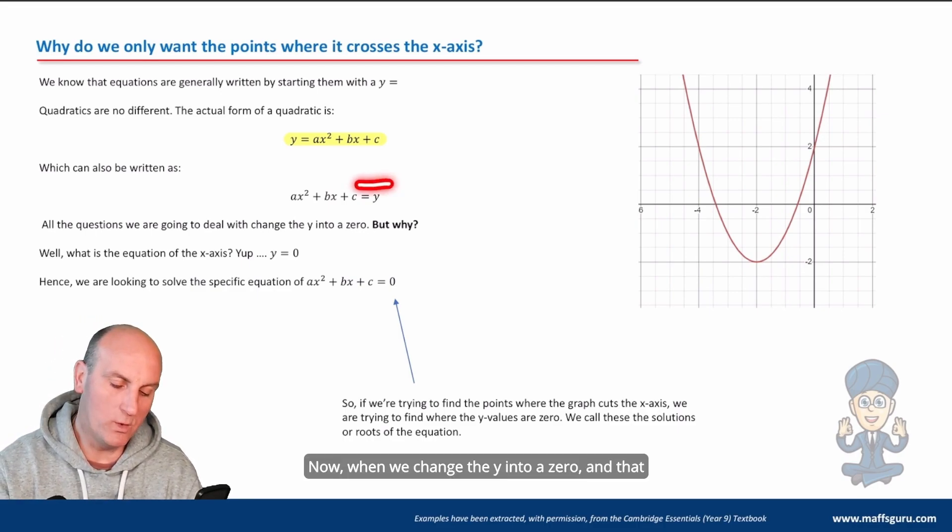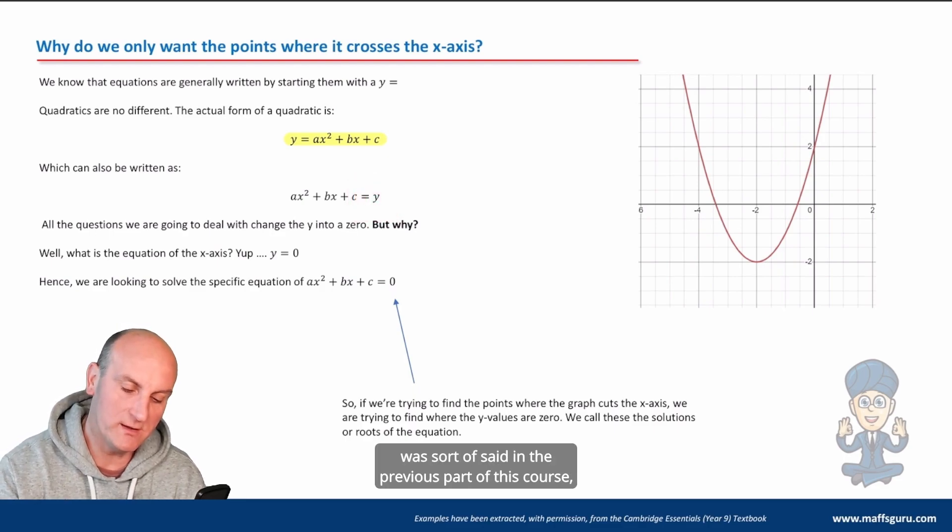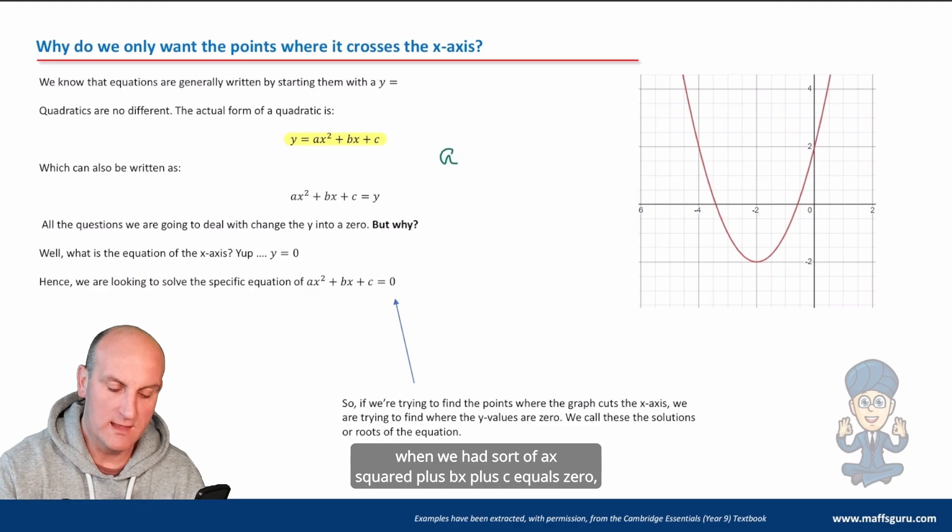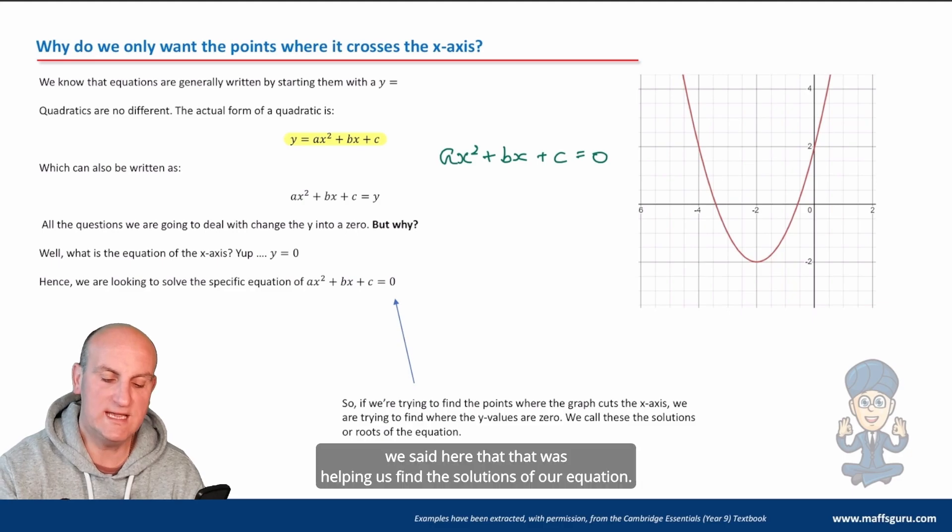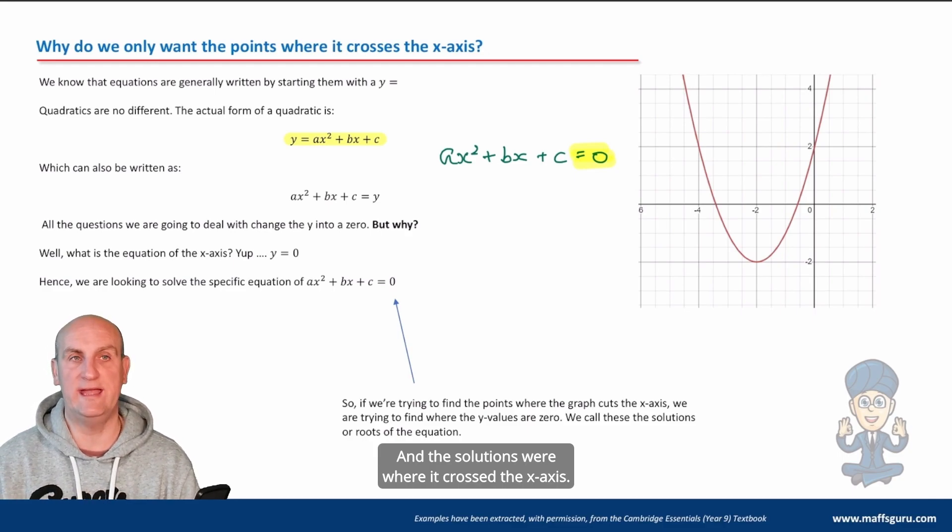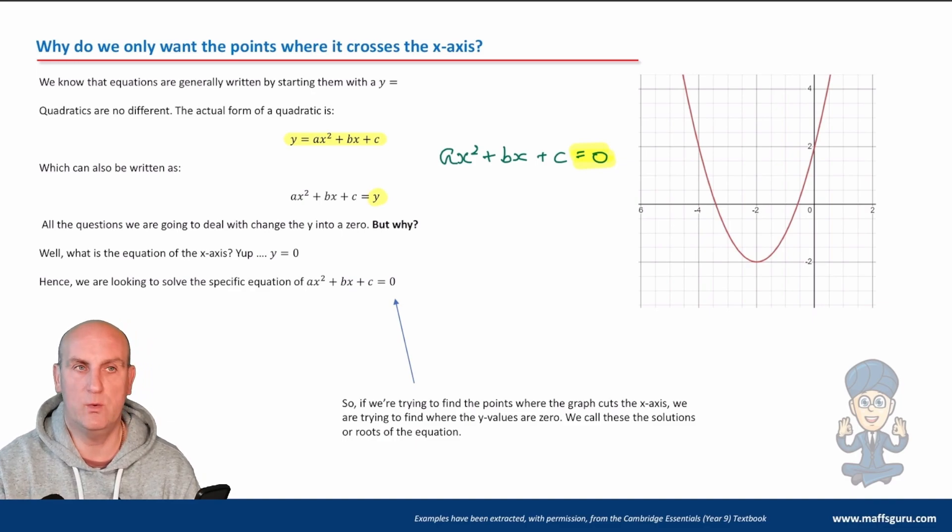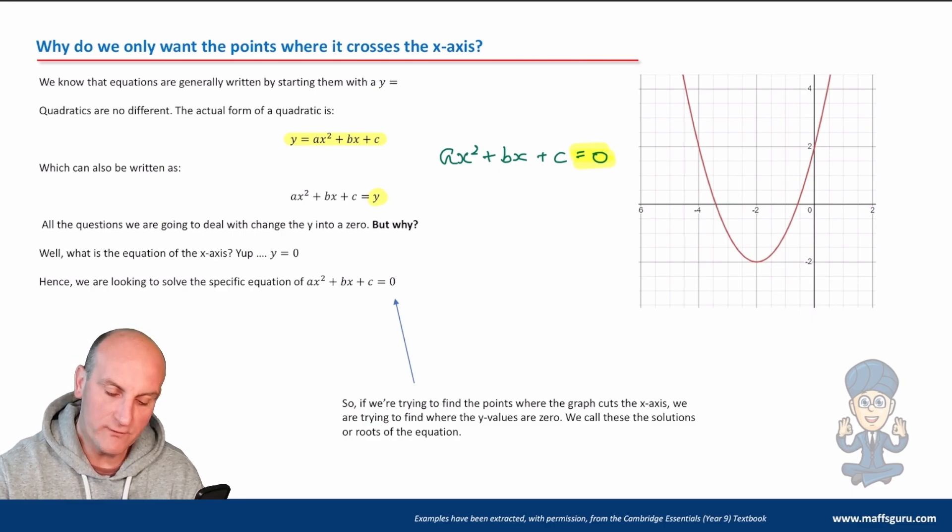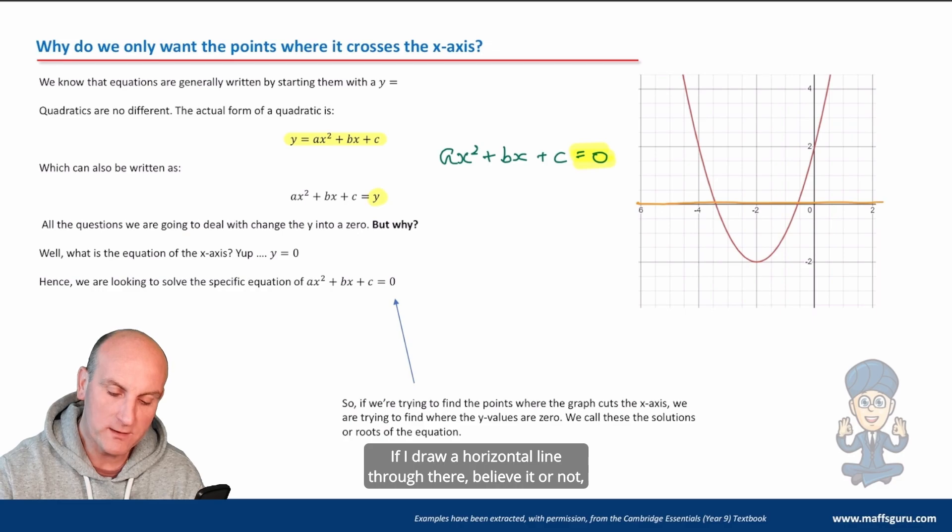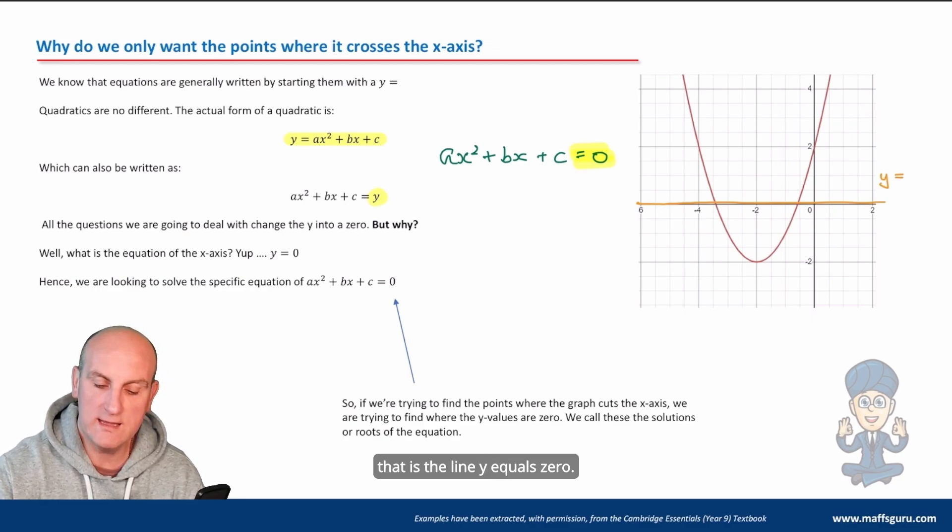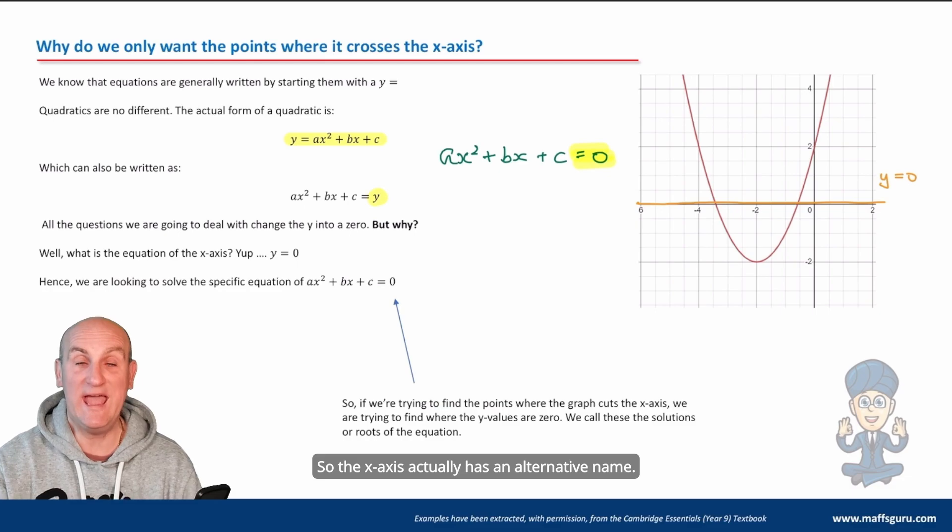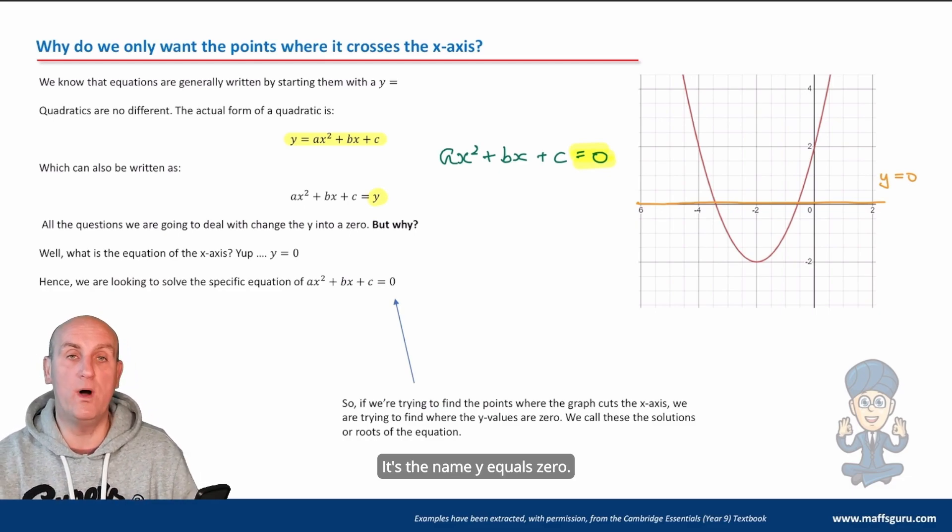Now, when we change the y into a zero, and that was said in the previous part of this course, when we had ax squared plus bx plus c equals zero, we said here that that was helping us find the solutions of our equation. And the solutions were where it crossed the x-axis. So why are we changing the y into a zero? Why can we change the y in this situation into a zero? Well, I alluded to that in previous part of the course. If I draw a horizontal line through there, believe it or not, that is the line y equals zero. So the x-axis actually has an alternative name. It's the name y equals zero.